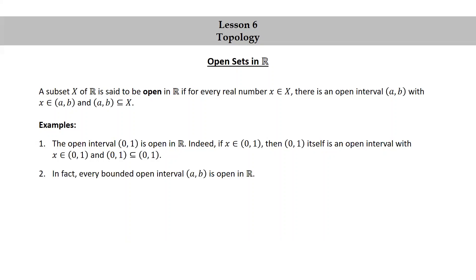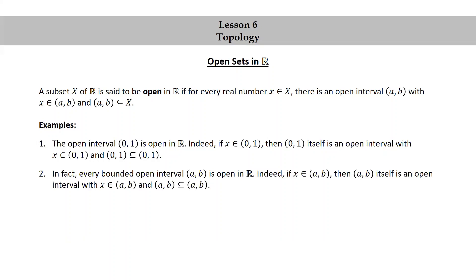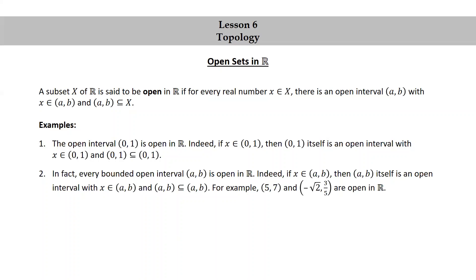In fact, every bounded open interval (a, b) is open in R. Indeed, if x is in (a, b), then (a, b) itself is an open interval with x in (a, b) and (a, b) a subset of (a, b). For example, the open interval (5, 7) and the open interval (−√2, 3/5) are open in R.